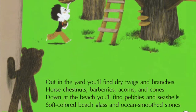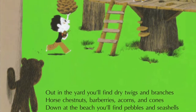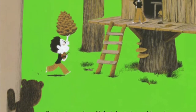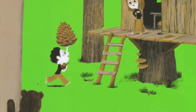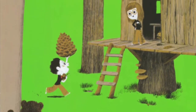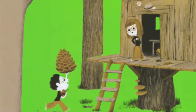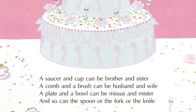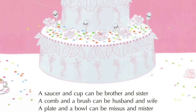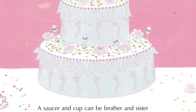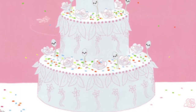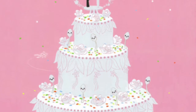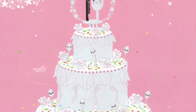Out in the yard, you'll find dry twigs and branches, horse chestnuts, barberries, acorns, and cones. Down at the beach, you'll find pebbles and seashells, soft colored beach glass and ocean smoothed stones. A saucer and cup can be brother and sister, a comb and a brush can be husband and wife. A plate and a bowl can be Mrs. and Mr., and so can the spoon or the fork or the knife.